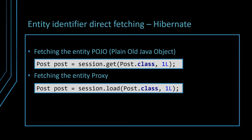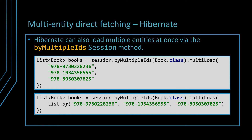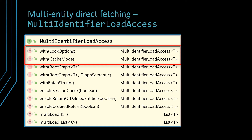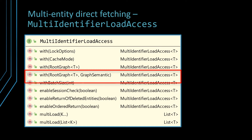Long before JPA 1.0 was released, the Hibernate session has been offering the get and load methods to fetch either an entity POJO or a proxy. These two methods are equivalent to the find and getReference JPA entity manager methods. The Hibernate session also allows us to load multiple entities at once via the byMultipleIDs session method, which can take either a variable length array or a list of identifiers. The byMultipleIDs method returns a multi-identifier load access object, which allows us to set a lock or cache mode strategy, an entity graph, or a custom batch size.